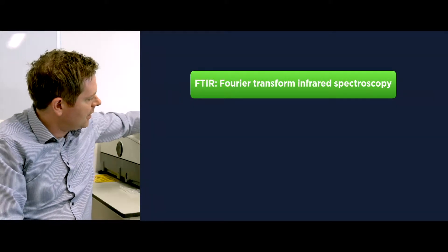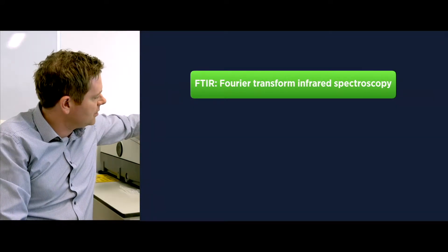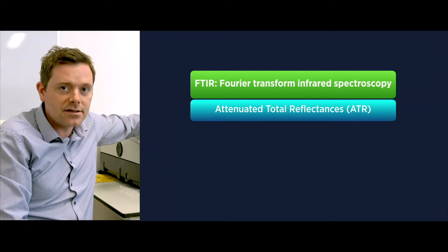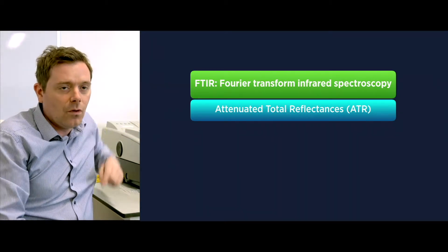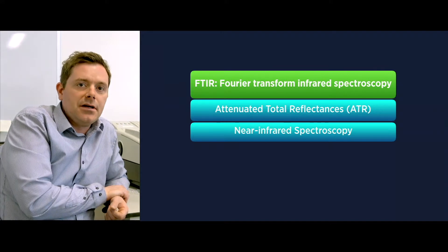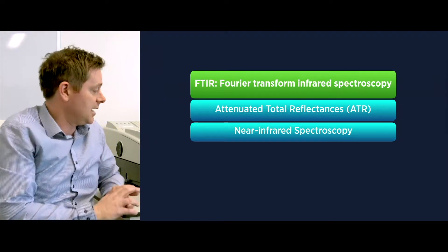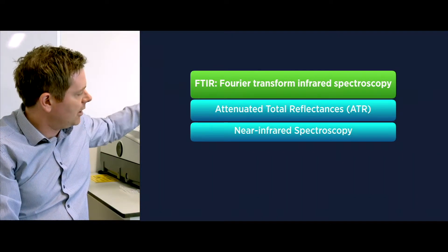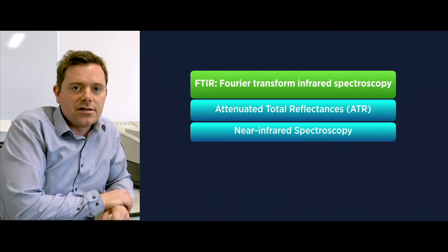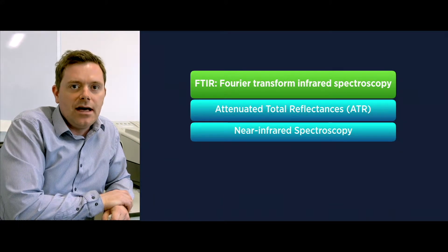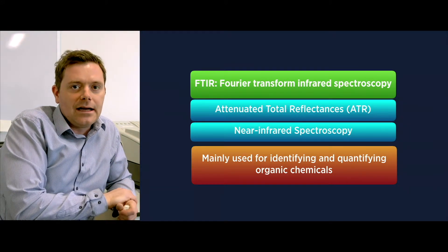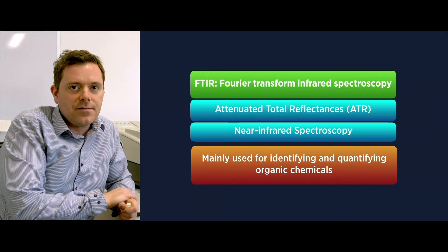It's a plug-and-play device, so we can use attenuated total reflectance or we can use near infrared spectroscopy, and take the beam line from the machine, which then doesn't restrict us to any specimen geometry — we have more adaptation for the experiment.